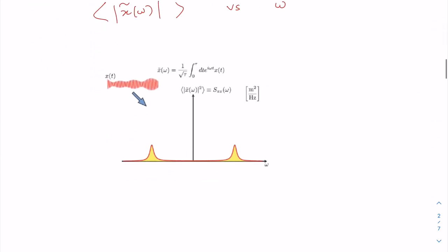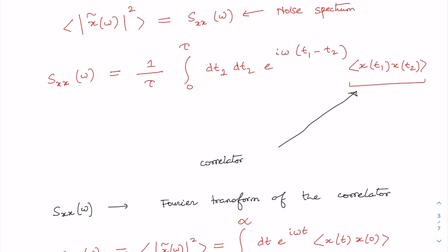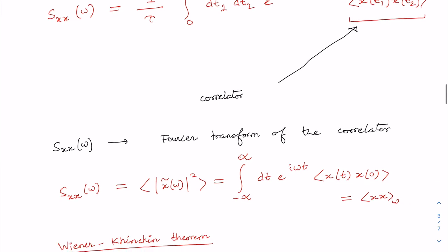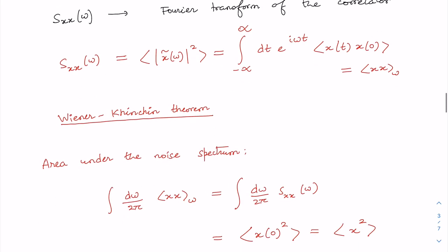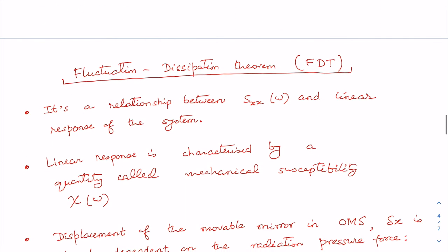It turns out that it is wise to look at the noise spectrum of the harmonic oscillator. The noise spectrum S_xx is a function given by the Fourier transform of the correlator, as we discussed in the last class. This fact that the noise spectrum is the Fourier transform of the correlator is also known as the Wiener-Khinchin theorem.